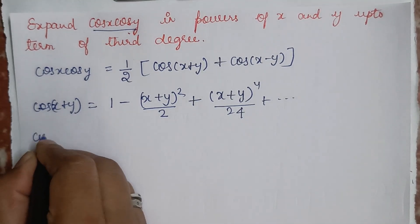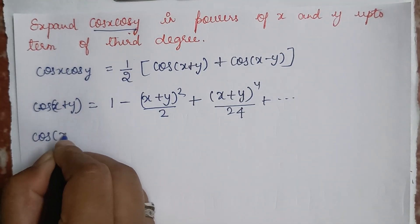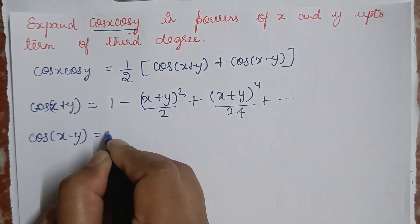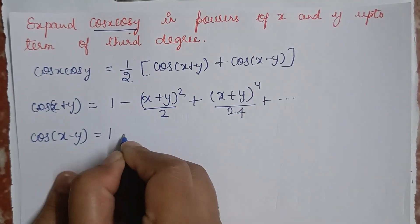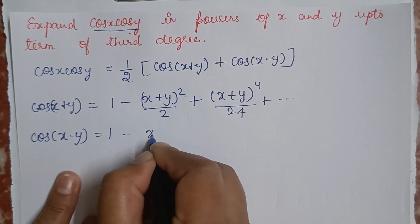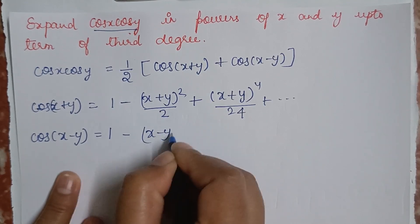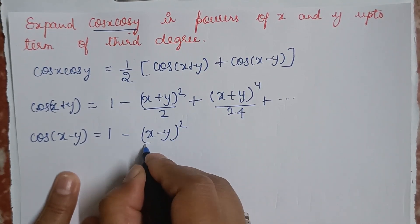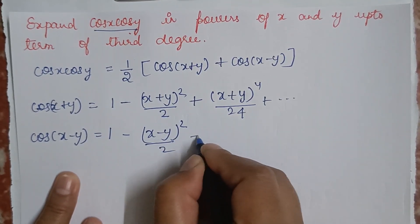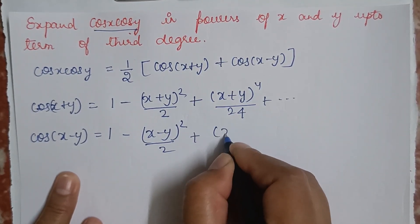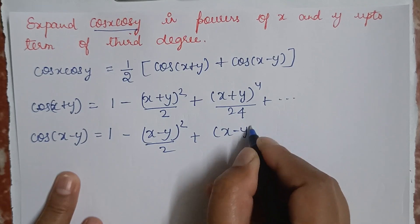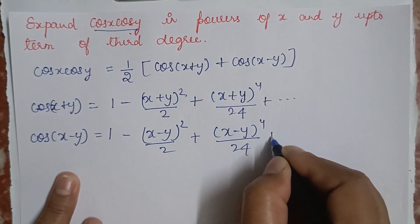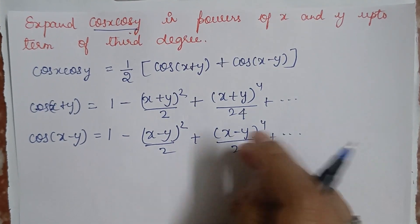Similarly, cos(x−y) = 1 − (x−y)²/2 + (x−y)⁴/24 + and so on.